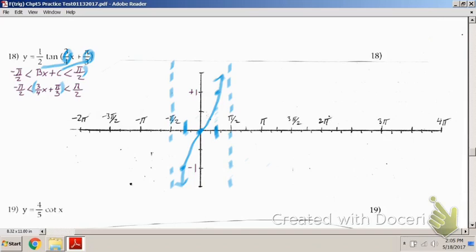Just word of caution. If you have something out here, that does not belong in the parentheses. That is a vertical shift, so we don't have to consider that. Just what's in the parentheses. So now we have this: negative pi over 2 is less than three-fourths x plus pi over 3 is less than pi over 2.